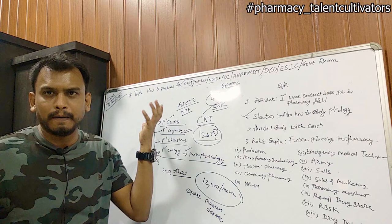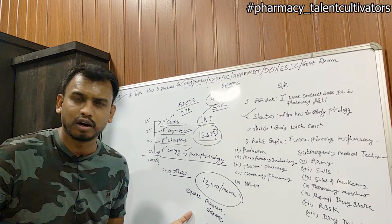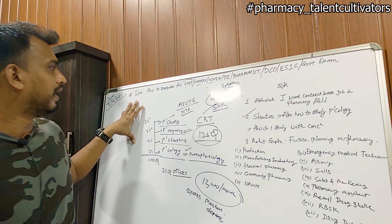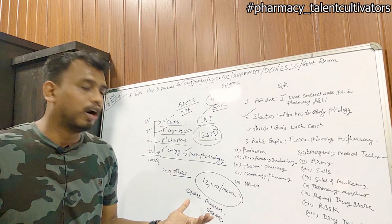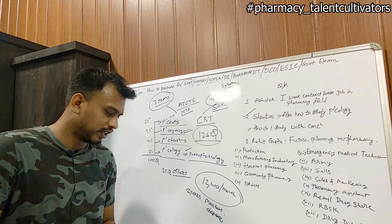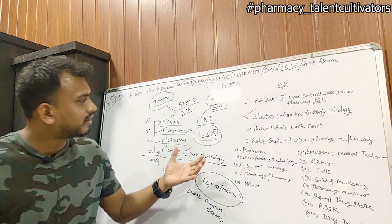It also gives financial support. When you qualify, you are around 21 to 22 years of age, so you don't have to depend on your parents for higher education. Even for a PhD, it is very important, as you are exempted from giving any research entrance test when you have qualified GPAT. NTA now gives three years of certificate validity, so you can utilize it when you want to do a Master's or PhD.